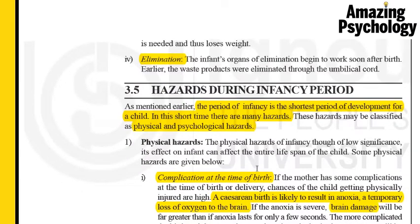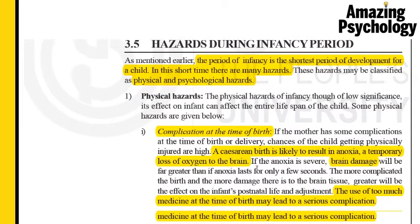We're on page 32 and we're looking at section 3.5, which covers the hazards during the infancy period. As discussed in the previous class, the infancy period is one of the shortest developmental periods once the child is born; however, it's also a time when many hazards can affect the child's growth. The hazards affecting a child are divided into two types: physical hazards and psychological hazards.